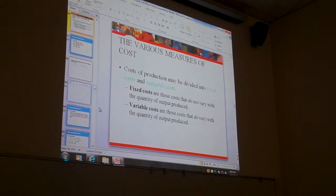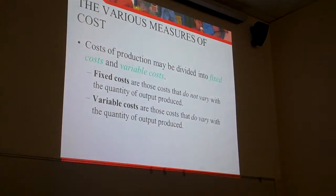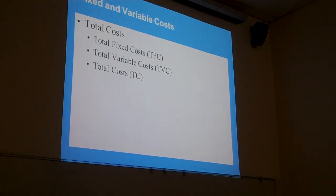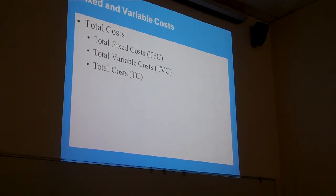Does it change with units of output? That's the question. Total cost — just some acronyms. Total fixed, total variable, and total cost. Total cost is the summation of total fixed and total variable.